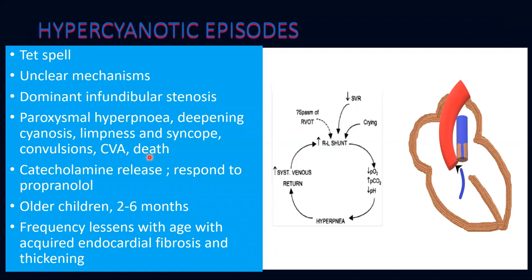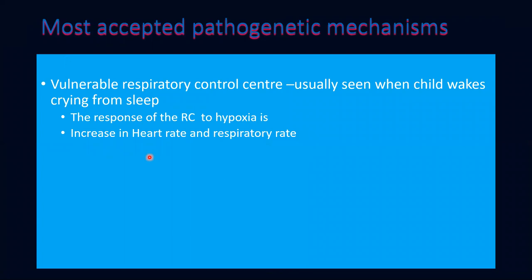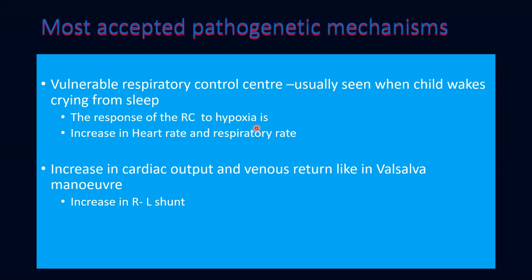Spells are usually seen from 2 to 6 months of age. As the child grows older — probably one year and above — frequency comes down due to endocardial fibrosis and thickening. One of the most accepted pathogenic mechanisms is that the respiratory control center is very vulnerable to hypoxia. When the child wakes up crying from sleep, this leads to some right-to-left shunt; the respiratory center responds by increasing heart rate and respiratory rate. Maneuvers increasing cardiac output and venous return, like the Valsalva maneuver, increase the right-to-left shunt. More desaturated blood reaches the aorta, and the infundibular stenosis contributes to but does not initiate the spell.